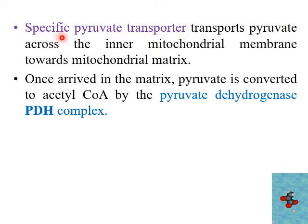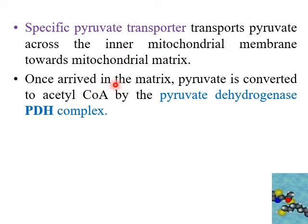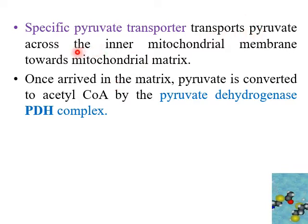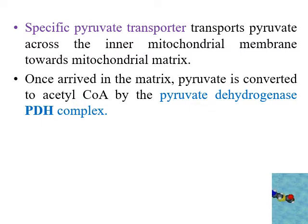Pyruvate is synthesized in the cytosol from glycolysis, but when it has to be converted into acetyl CoA, it travels to the mitochondrial matrix with the help of a transporter called the pyruvate transporter. Once it has arrived in the matrix, it is converted into acetyl CoA by the pyruvate dehydrogenase complex.